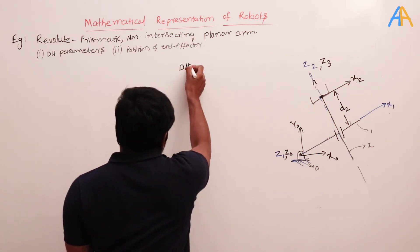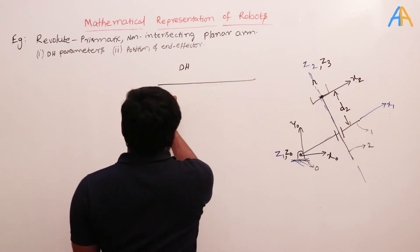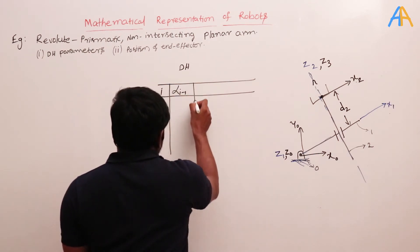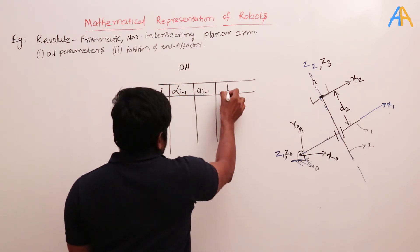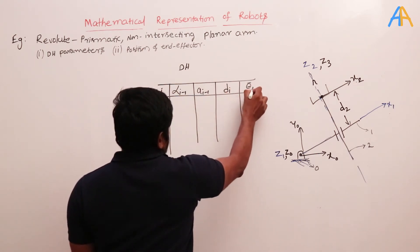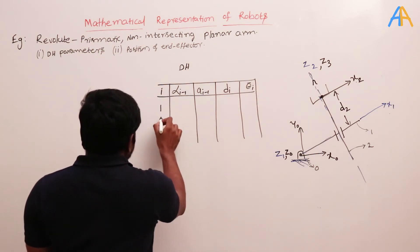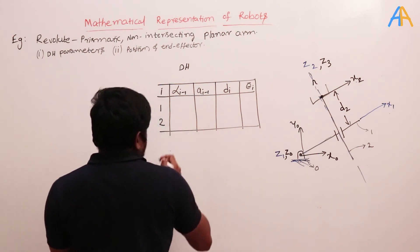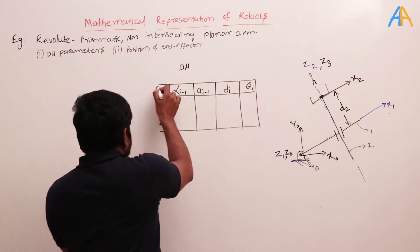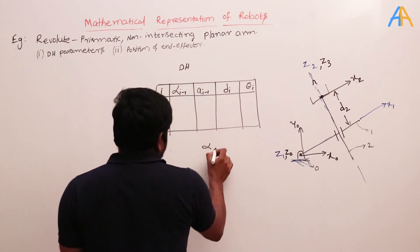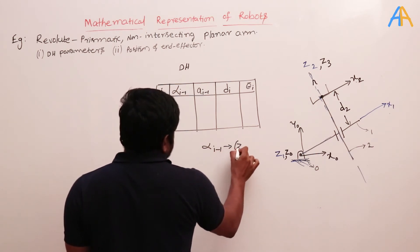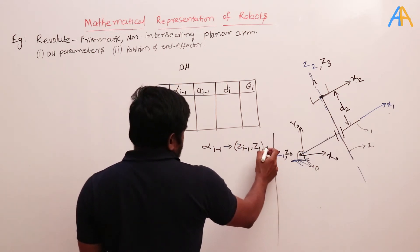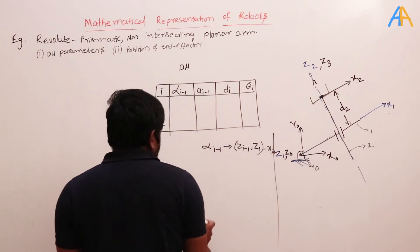Now we need to write the DH parameters. The table has columns: link, alpha(i-1), a(i-1), d(i), and theta(i). There are only two links. Alpha(i-1) is the angle between z(i-1) and z(i) measured along x(i-1). For i=1, it becomes alpha-naught, the angle between z-naught and z1 along x-naught. For i=2, it becomes alpha-1, the angle between z1 and z2 along x1.